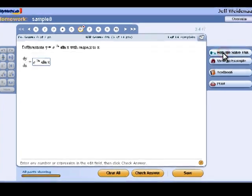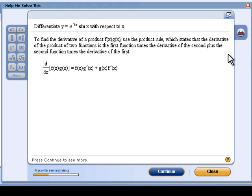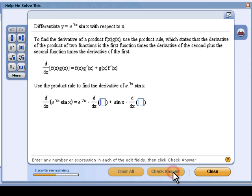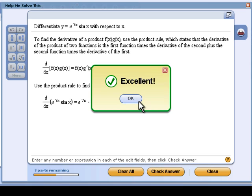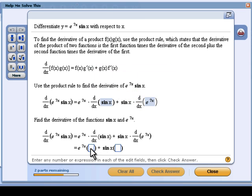The button labeled Help Me Solve This opens a new window with a problem similar to the original homework problem. Here, however, students walk through the problem a step at a time. Many steps require students to provide answers along the way. This process mirrors the process that you might use if a student came to your office and asked for help.